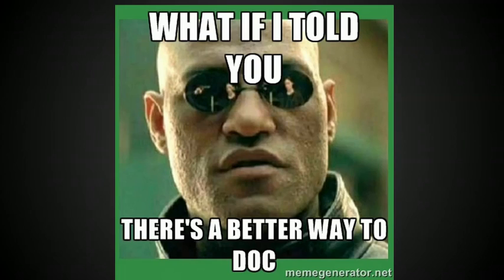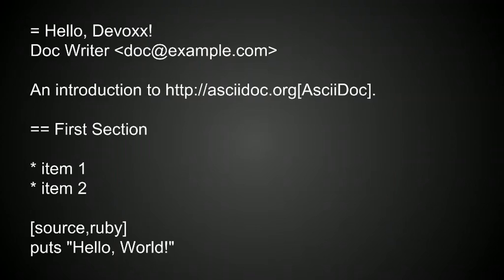So what if I told you that there is a better way to write documentation, that you can do these things as you would do in your regular development workflow? Here's an example. This is just plain text. You see a couple of annotations — the first thing is just the title, then we have a paragraph, then we have another section. Those of you that are familiar with Markdown can pretty much copy and paste Markdown code, and almost all of it will be valid AsciiDoc.